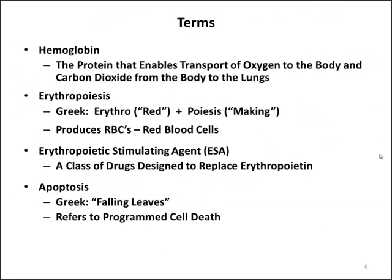Some more terminology: hemoglobin is a protein that enables the transport of oxygen to the body and carbon dioxide from the body to the lungs. The term erythropoiesis comes from the Greek, meaning 'red making' — we're talking about the production of red blood cells. Erythropoietic stimulating agents are a class of drugs designed to replace the naturally occurring hormone erythropoietin. And apoptosis, also from the Greek meaning 'falling leaves,' refers to programmed cell death. We'll see where that comes in in the red blood cell cycle in just a moment.